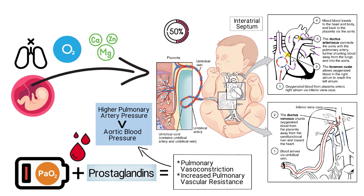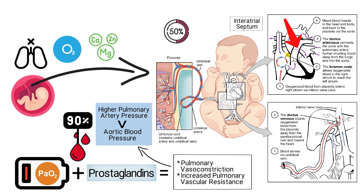This causes approximately 90% of the blood entering the pulmonary artery to shunt through the ductus arteriosus, which is a muscular vessel connecting the trunk of the pulmonary artery to the aorta, into the systemic circulation.